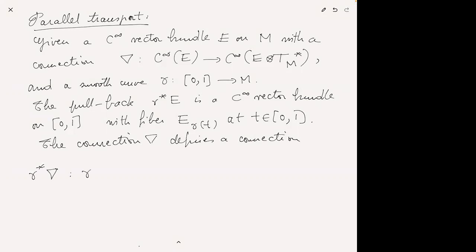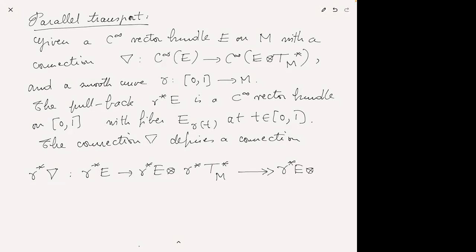This is a slight abuse of notation. What I'm doing: I want to go from gamma-star of E to gamma-star of E tensored with the cotangent bundle of [0,1]. That's by definition a connection on gamma-star of E, but that's not what I get directly. Normally when I pull back nabla I go to the pullback of the cotangent bundle of M, and then this has a projection onto the cotangent bundle of [0,1]. This composition is gamma-star of nabla.